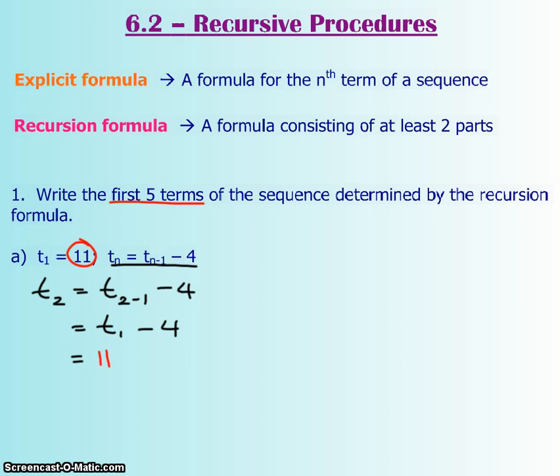So I've used the previous term value in order to find my current term value. That's the whole idea of recursion formulas and procedures. So your term value for your second term is 7.